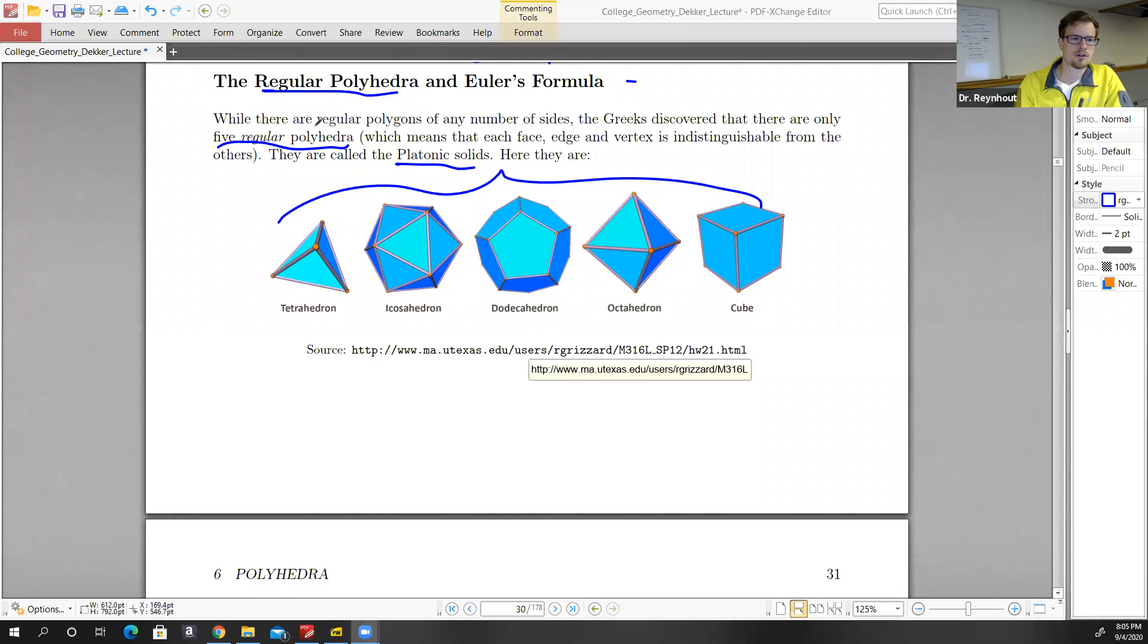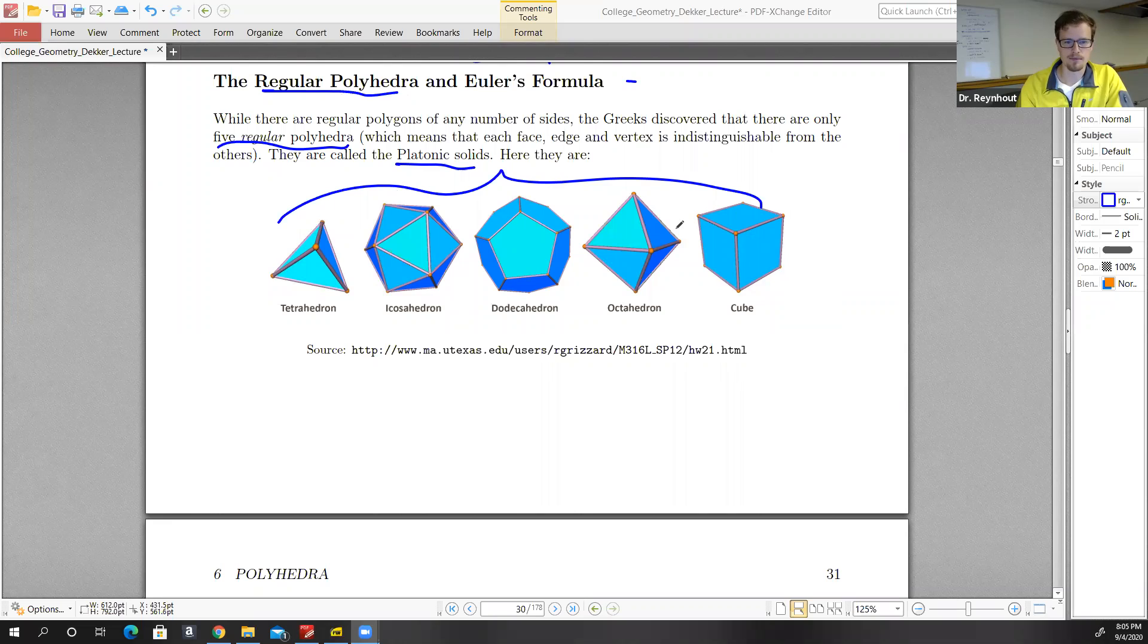So we introduced the regular polyhedra. There's five of them: one, two, three, four, five polyhedra.